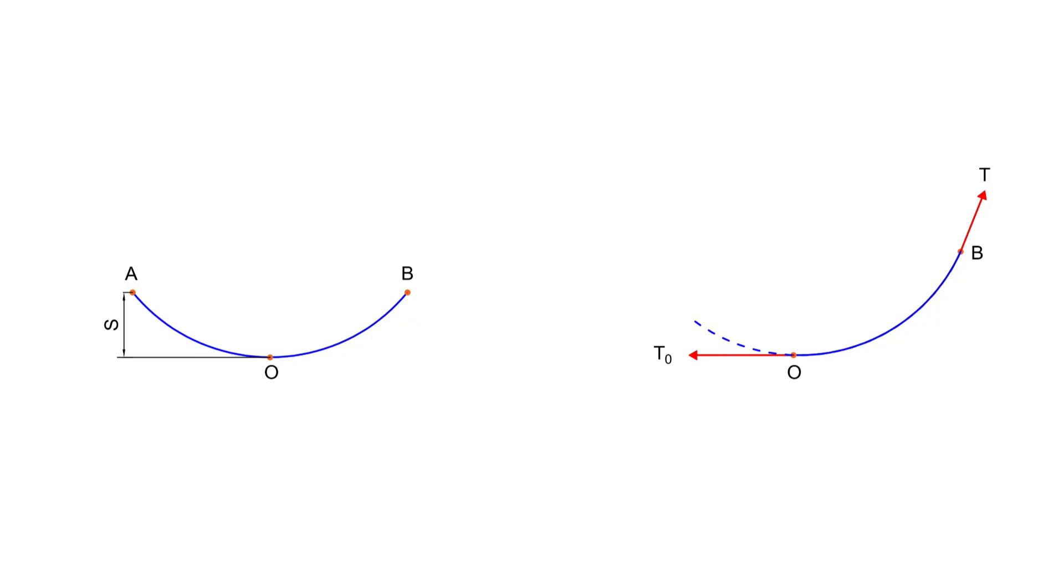The vertical dip from A or B down to O is called the sag S. A small sag keeps the wire safe, and too much sag requires taller poles, so we have to balance between conductor material cost and mechanical safety. Interestingly, the conductor curve actually forms a catenary shape, but when sag is very small compared to span it looks like a parabola.